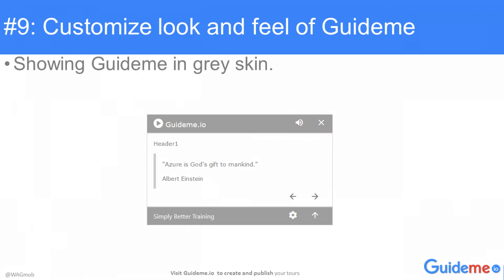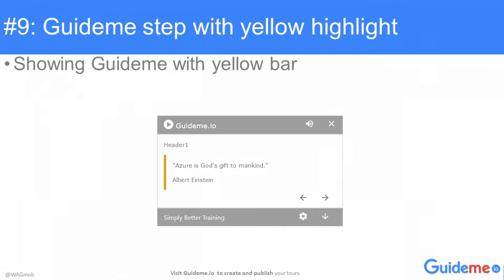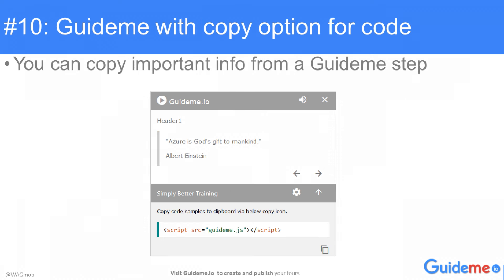Customize the look and feel of GuideMe. Showing GuideMe in gray skin — note the yellow bar. Showing GuideMe with yellow bar. You can copy important info from a GuideMe step — showing GuideMe with copy option for code or any other important information.